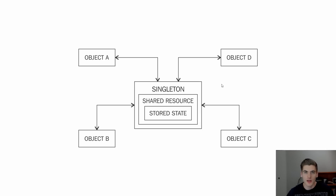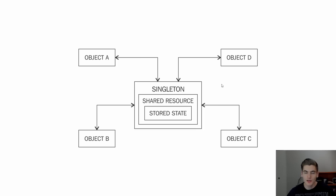This can lead to some problems with creating global variables, since these singletons are essentially global to your entire application. Having a single object that is global and controls so much of your application can be incredibly hard to test, since you need that single object in order to test anything. It can create a bunch of coupling between different parts of your application, where all of your code relies on this singleton object, making it very hard to change or refactor. Lastly, you can run into race conditions, where changing things inside the singleton in different parts of your application at the same time can cause data to get overwritten or not read correctly.